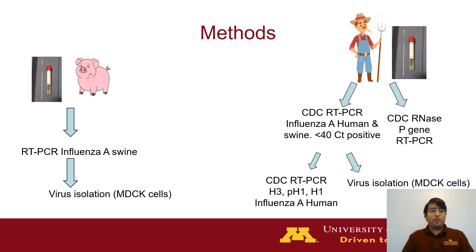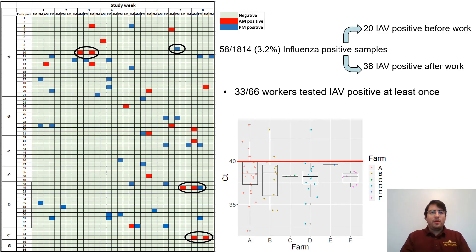Once we obtained nasal swabs from the pigs or the humans, we performed PCRs specific for swine or a CDC-provided PCR to detect human and swine influenza samples. We also had a subtyping PCR that allows differentiation between H3s, pandemic H1, and seasonal H1.